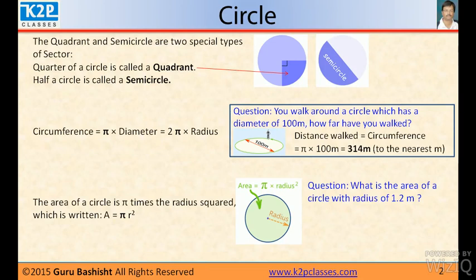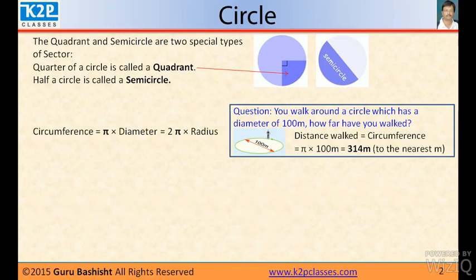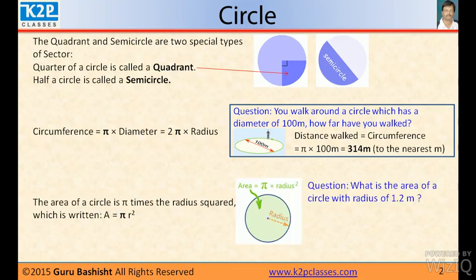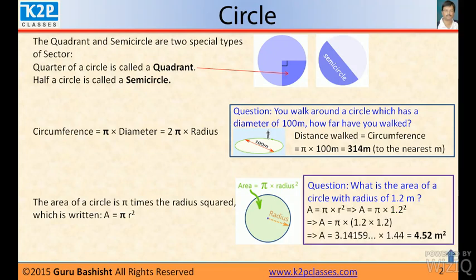Questions. What is the area of a circle with a radius 1.2 meter? That is 4.52 meter square.